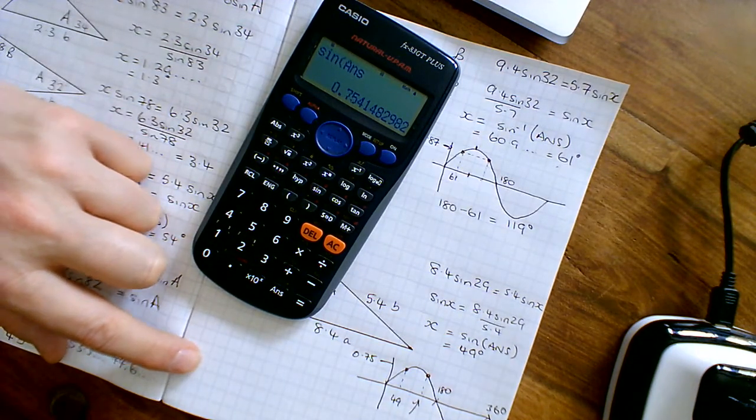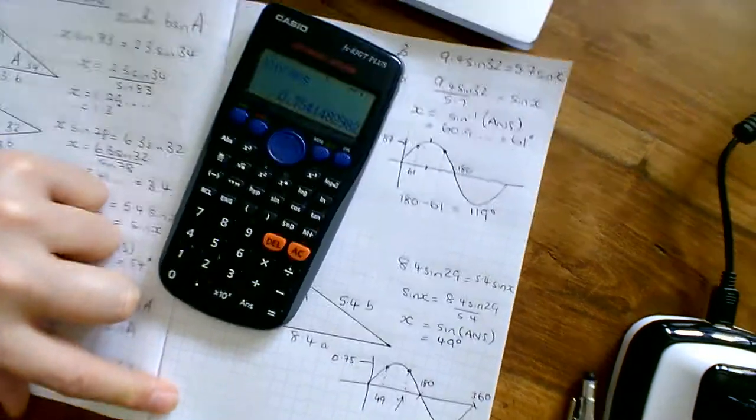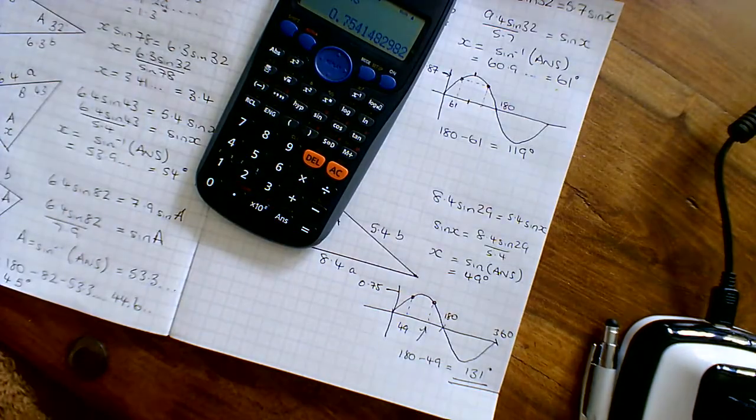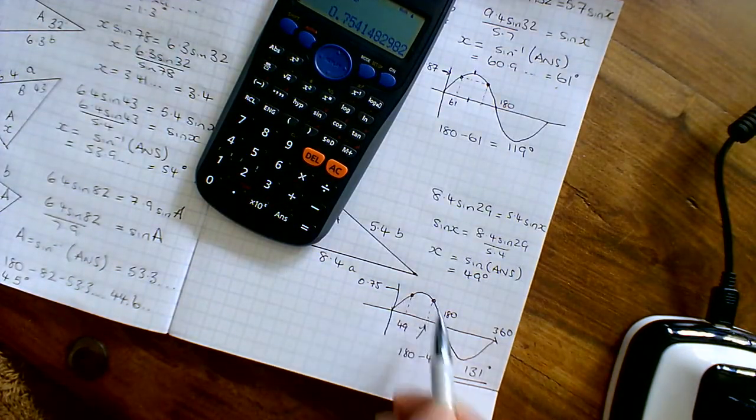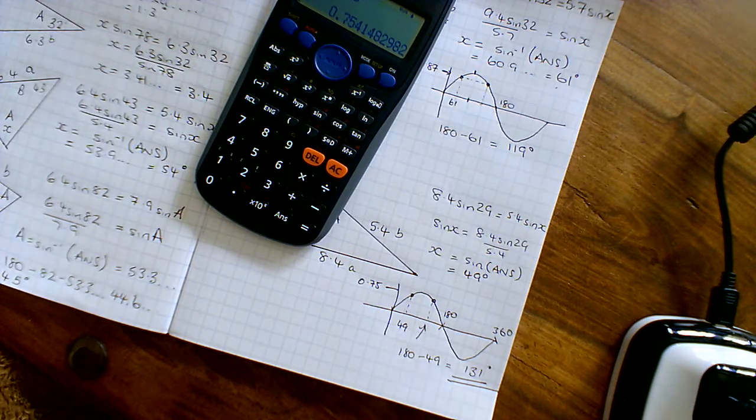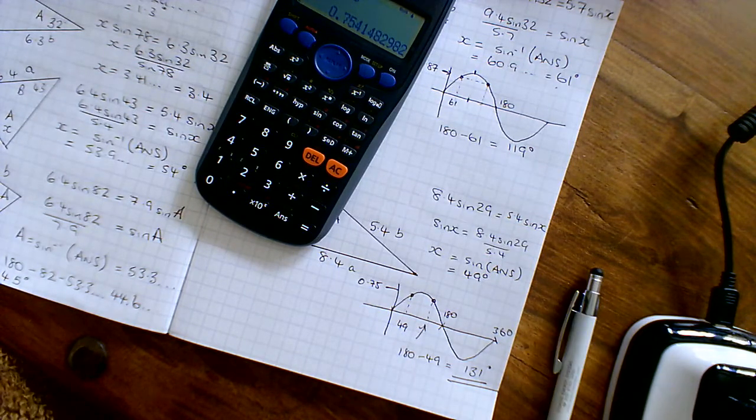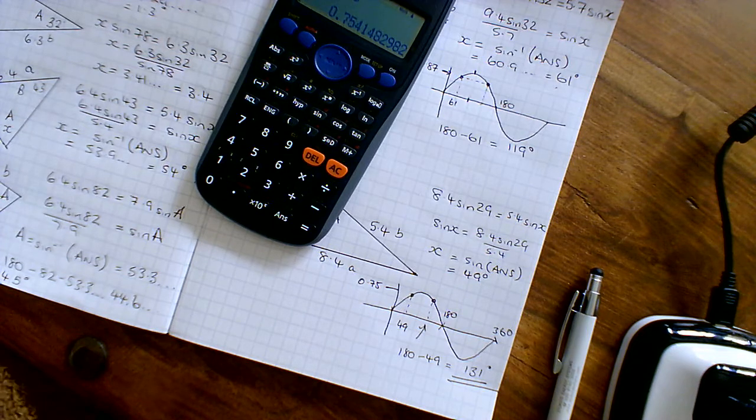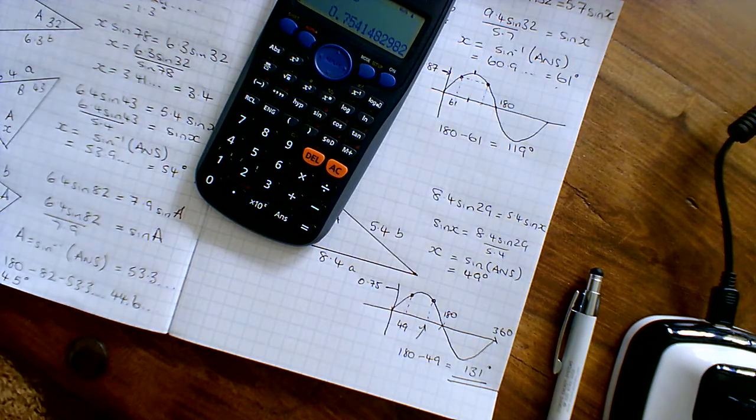So that's the answer that I'm after on this question, 131 degrees. I did the 0.75, hit the graph, hit the graph here, and then read off what it was. It was 180 take away that 49, 131. Right, I'm going to put these answers into my maths, see if they're right, and if they're right I'll publish this one. If not, I'll do it again, don't worry.